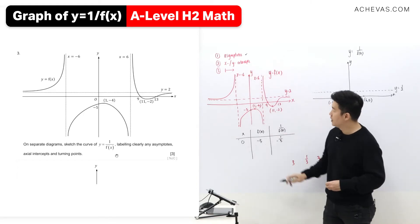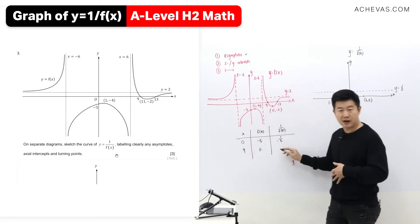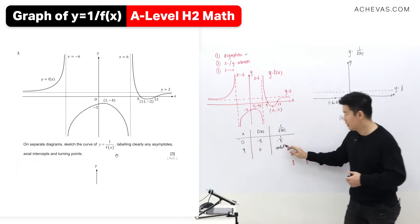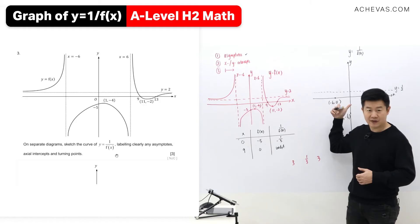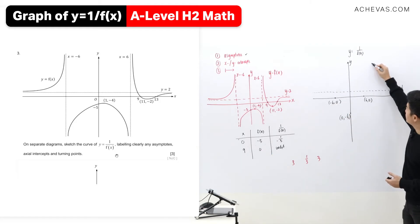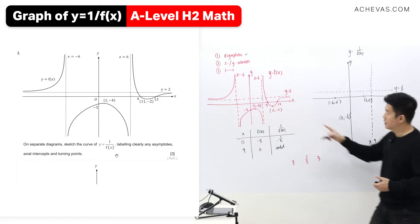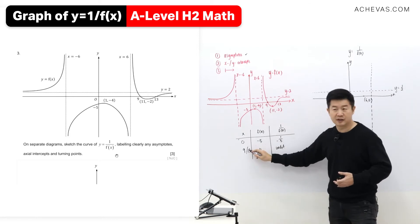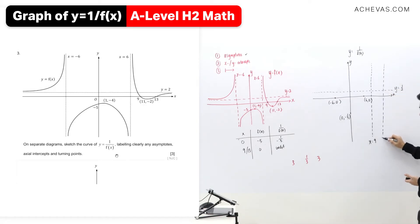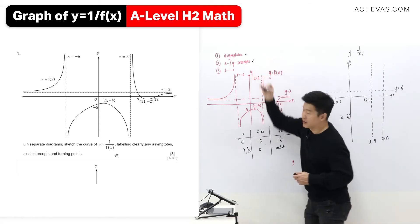I've already finished that point. When x is equal to 9, f(x) is 0, so 1 over f(x) is undefined — that's a vertical asymptote at x equals 9. Similarly, when x is equal to 13, I'll also be getting a vertical asymptote at x equals 13. So I've worked on those already.